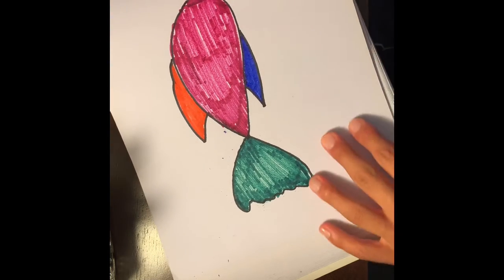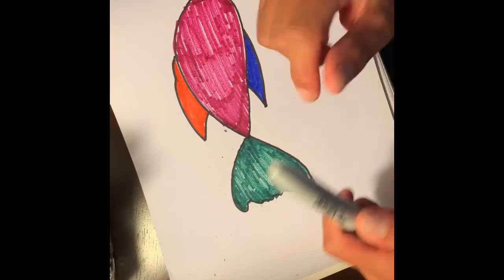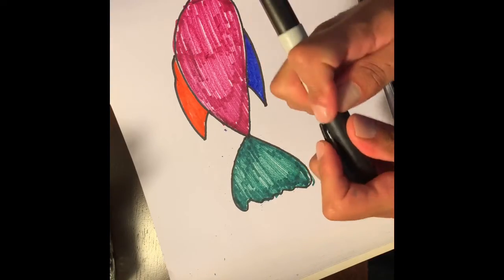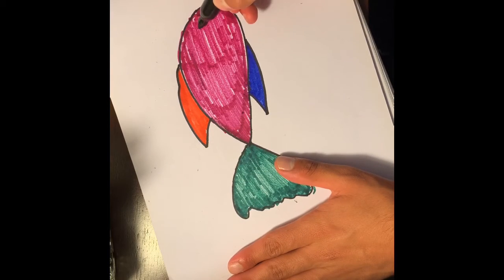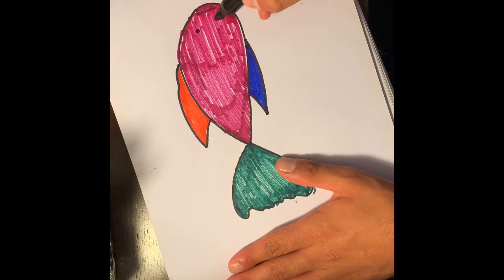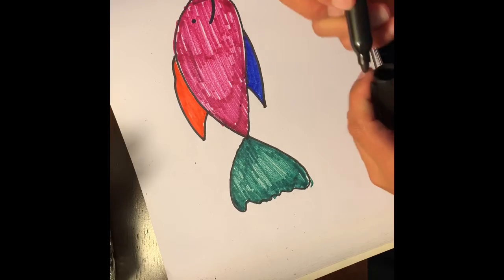Okay now the fish, they have eyes and mouths like us, so we have to draw the fish's eyes and mouth. So there's the eye and we give him a nice little smile.